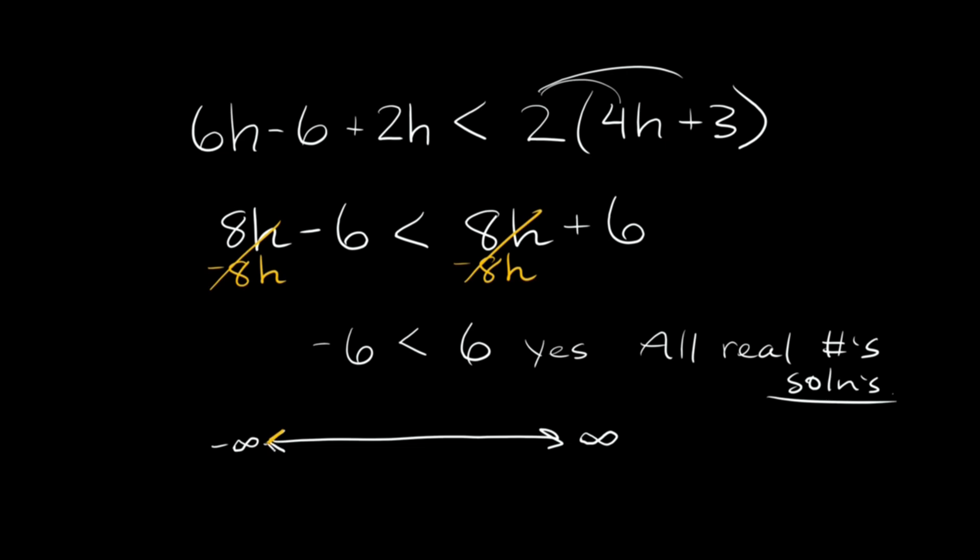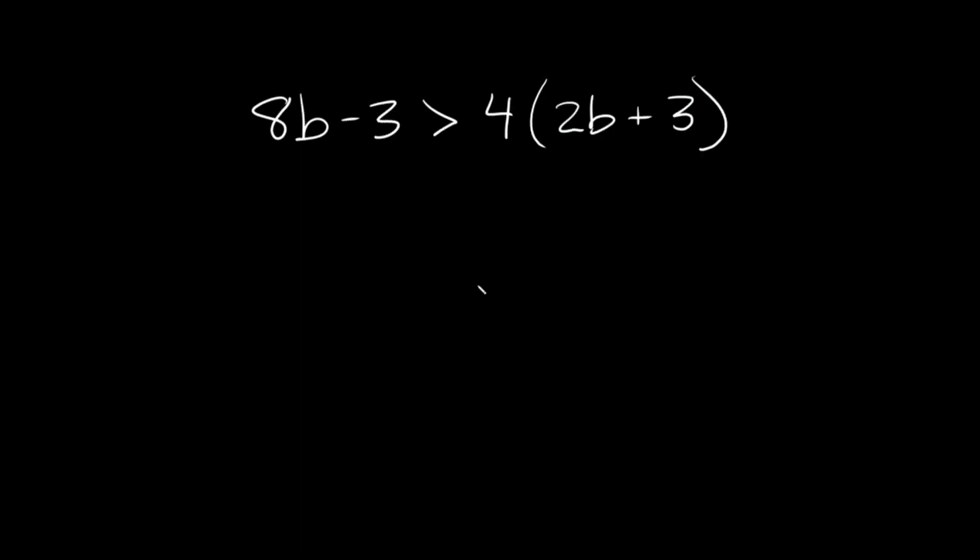So if you wanted to shade something in, you would literally shade in the entire number line, because all the numbers on this number line would work as solutions, again, for this equation. And if you wanted to write that in interval notation, it would just be we're going from negative infinity to positive infinity.